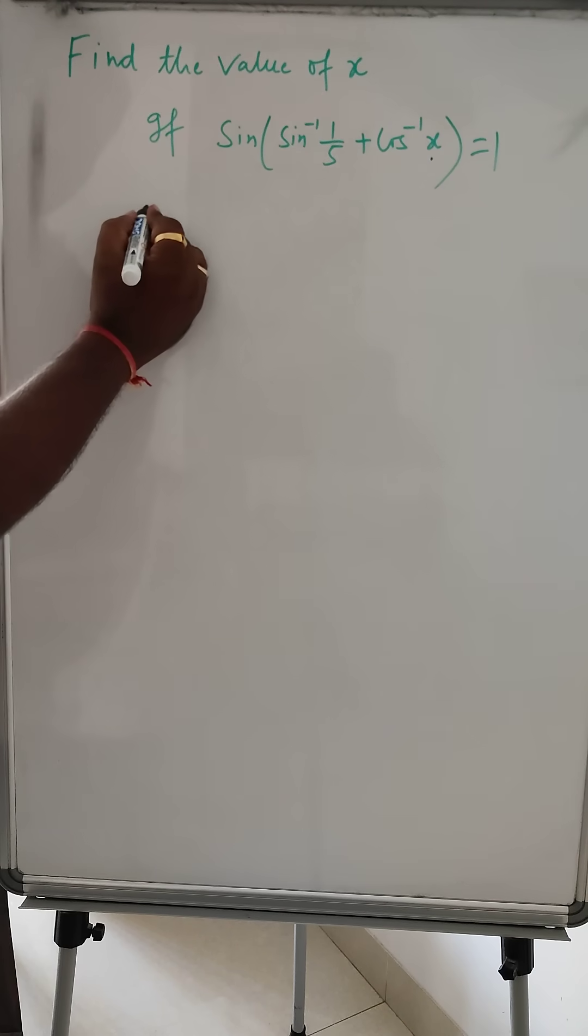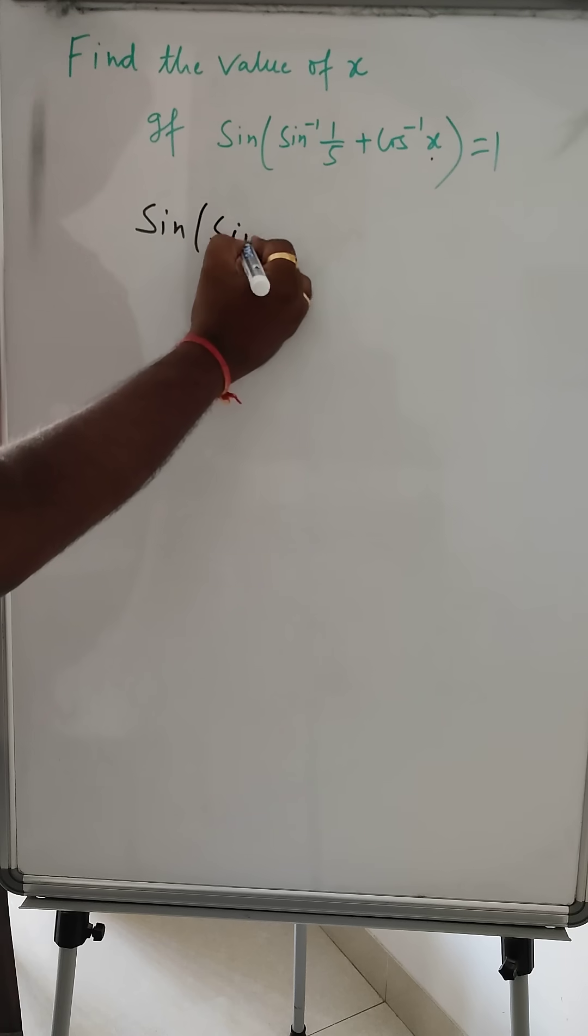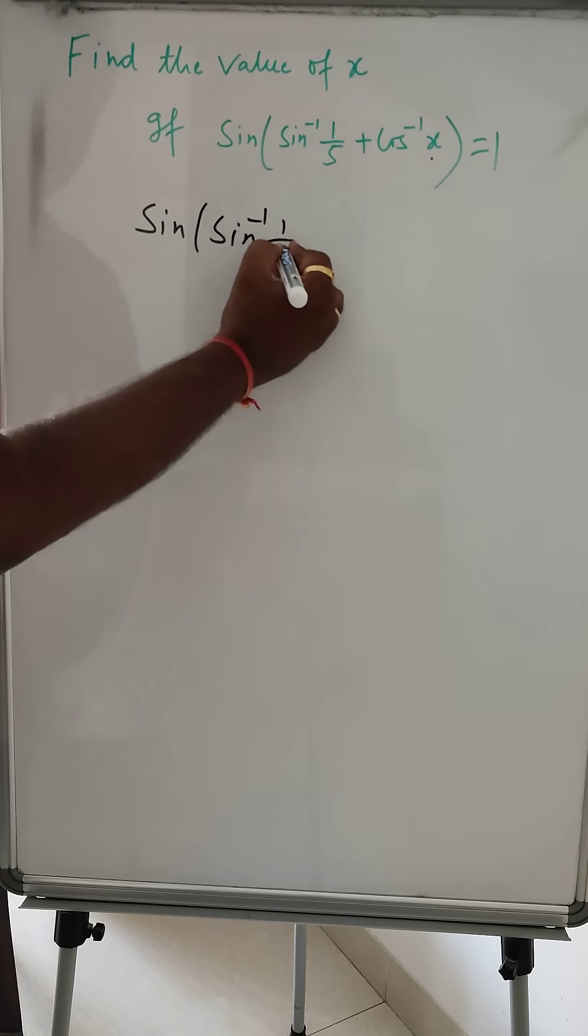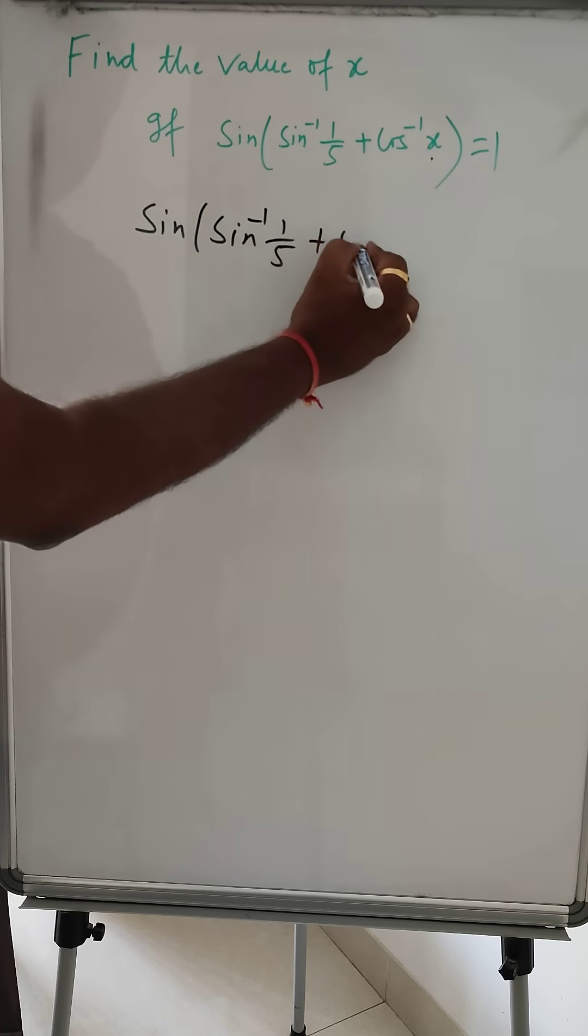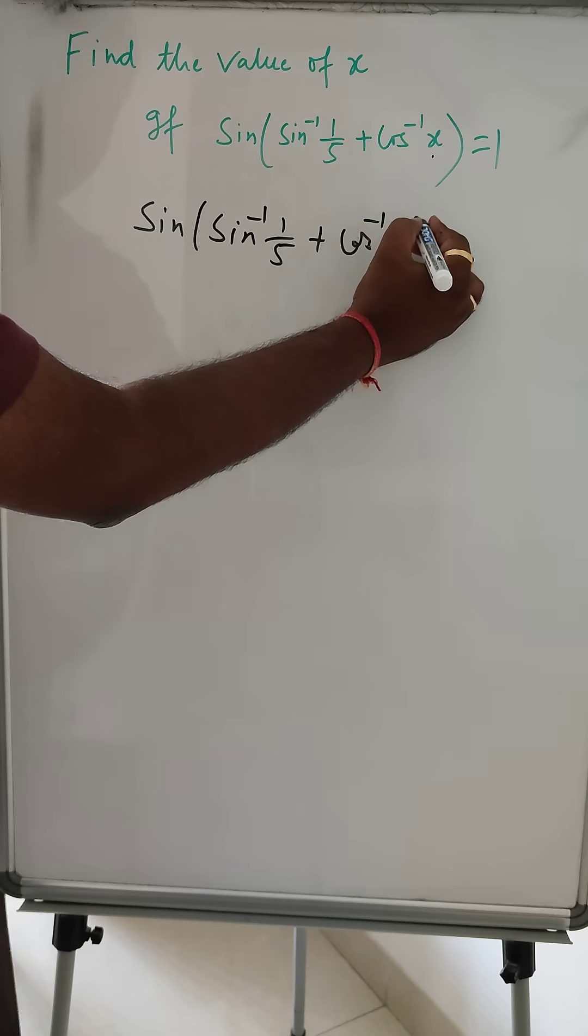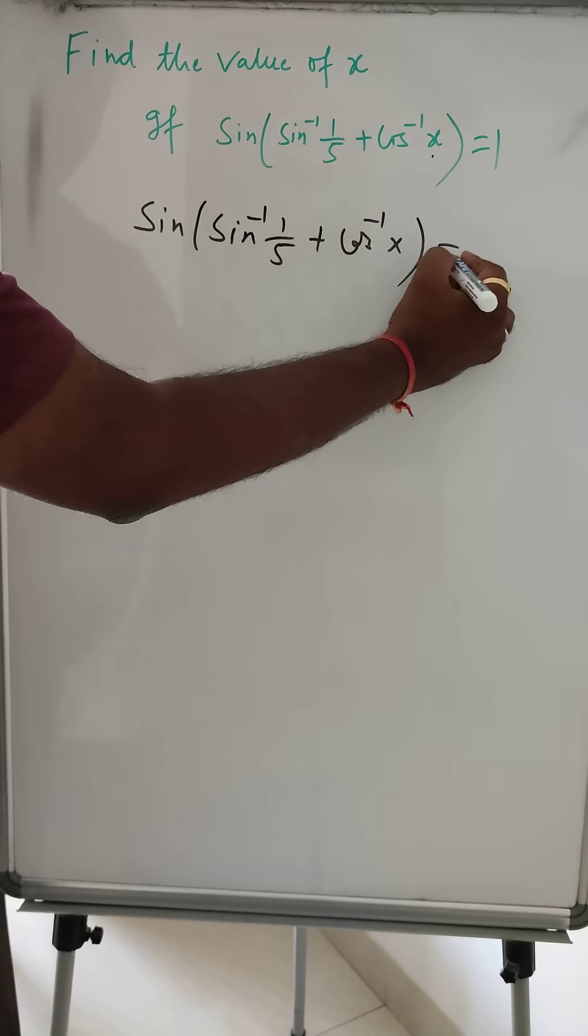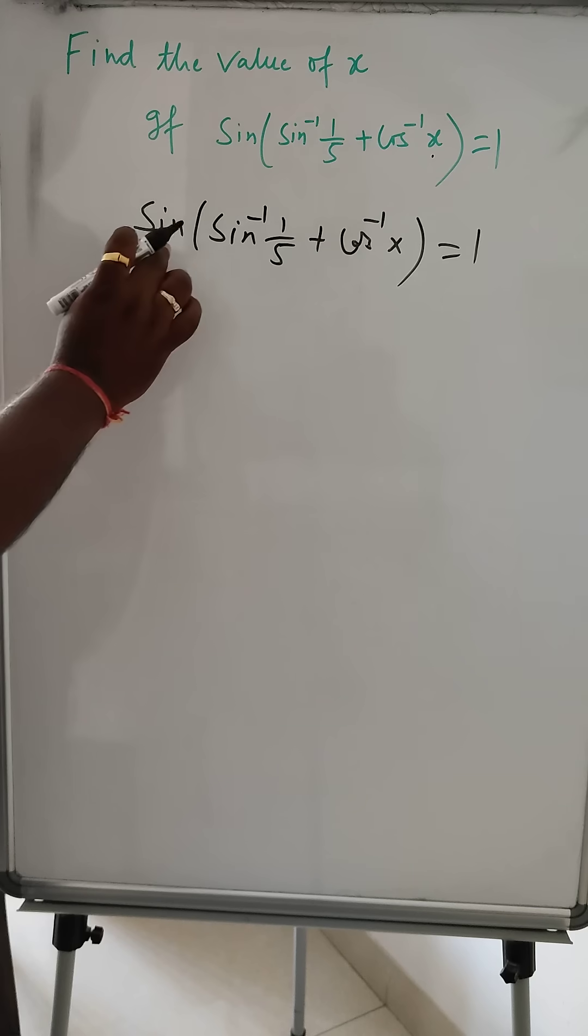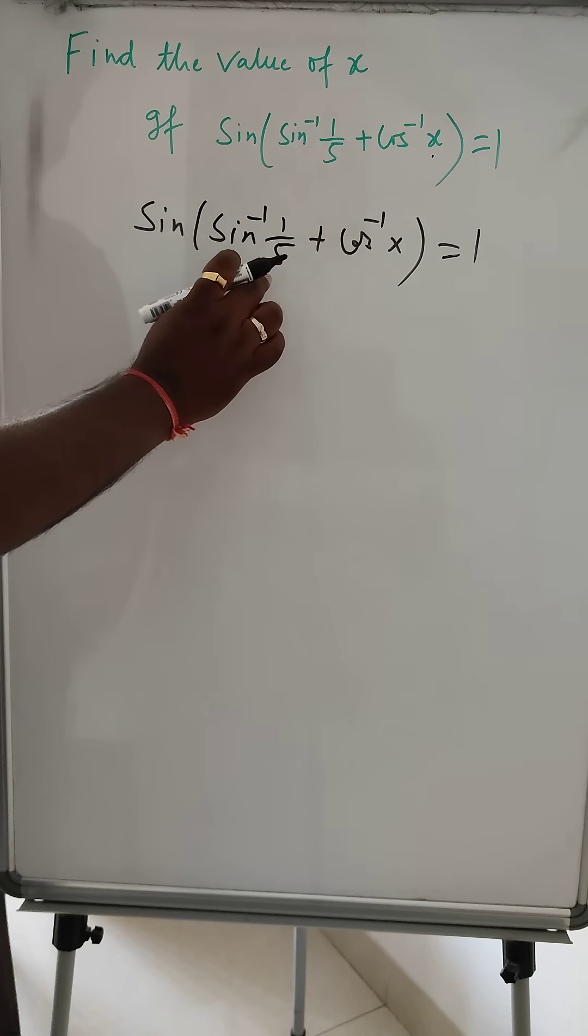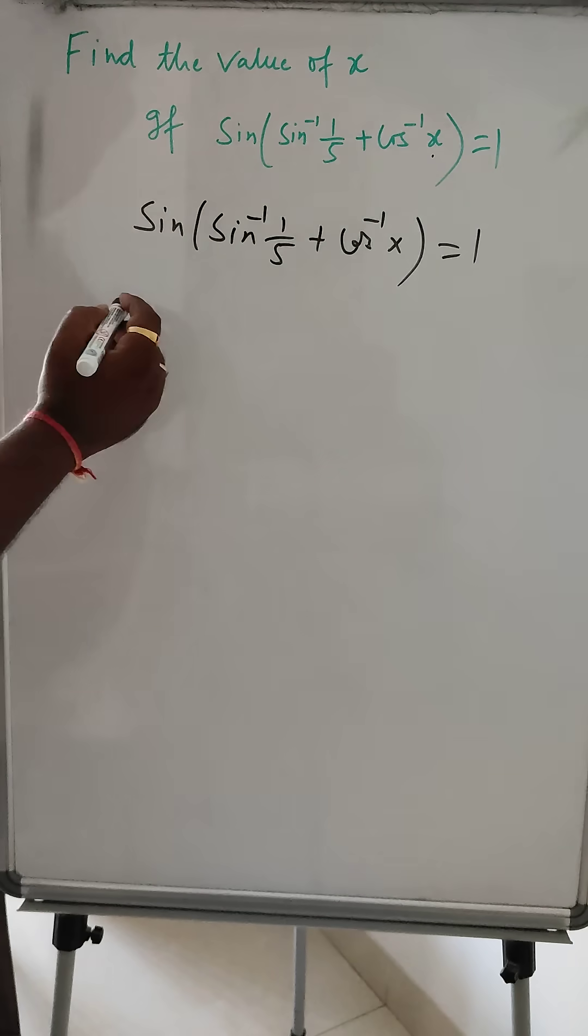So we have given sin inverse 1 by 5 plus cos inverse x, and it's equal to 1. Now we know sin 90 degrees is equal to 1, and 90 degrees is π by 2, so this value will be equal to π by 2.